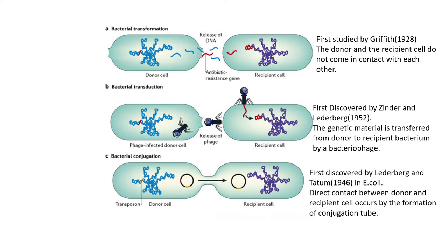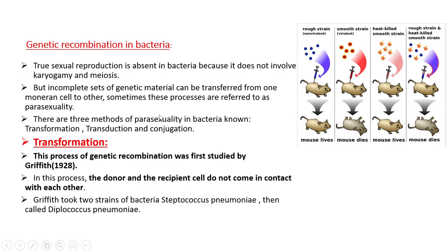True sexual reproduction is absent in bacteria because it doesn't involve karyogamy — the fusion of two nuclei — and meiosis producing four haploid daughter cells. However, incomplete sets of genetic material can be transferred from one moneron cell to another, and sometimes these processes are referred to as parasexuality.